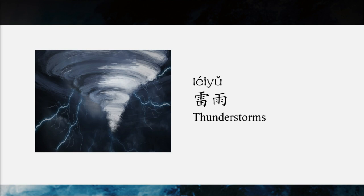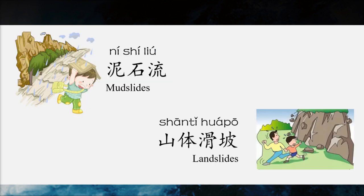It is dangerous if there is heavy rainfall within a short period of time in a mountainous area. There may be mudslides and landslides. 没错。如果这样短时间的大雨出现在山区，就很危险了，可能会有泥石流和山体滑坡的情况。So 泥石流 is mudslides, 山体滑坡 is landslides. 这一次北京西部靠近山区的部分就有比较严重的泥石流和山体滑坡的情况发生. There were more serious mudslides and landslides in the western part of Beijing near the mountains.